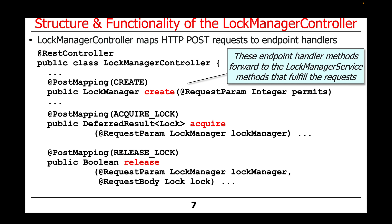There are a number of different methods defined here in the controller. We have the create method, the acquire method, and the release method, and there are actually a couple of variants of acquire and release. The methods here are all just going to end up forwarding to the underlying LockManager service methods that actually fulfill the client requests.